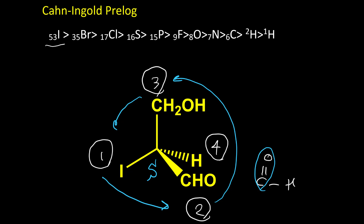So this example was the simplest possibility for finding configuration because number four was always in the back. Let's see what we should do if number four is in the front or is in the plane of the molecule.